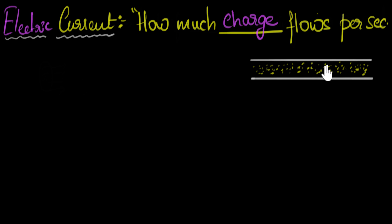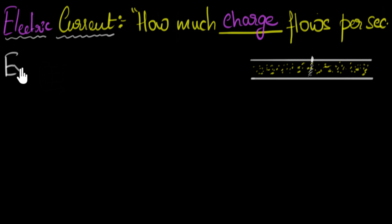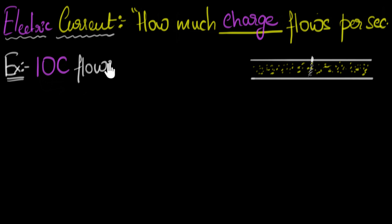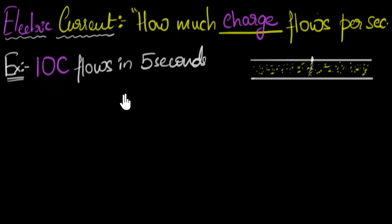Now let's say you stand at a point on the wire and calculate how much charge is flowing through that point. Let's concentrate on this one point of the wire and calculate how much charge is flowing through it. Let's say you measure and find out that there are 10 coulombs of charge that flow through that point in five seconds.